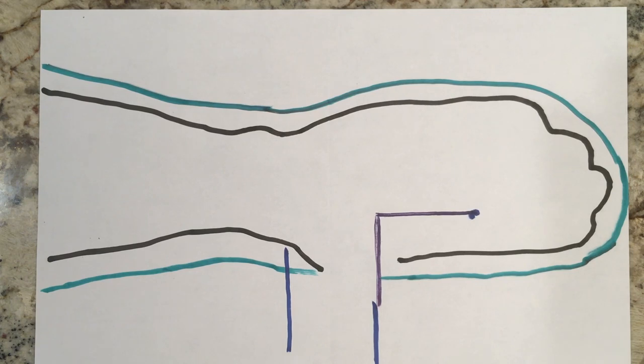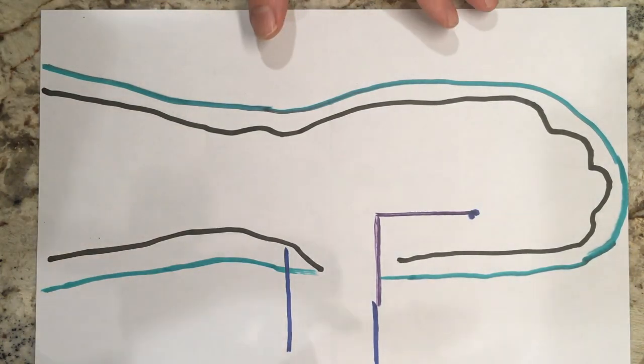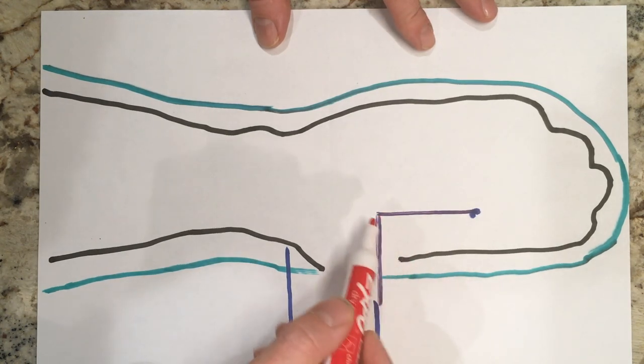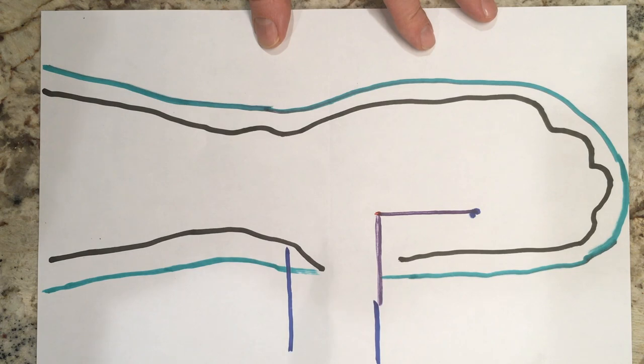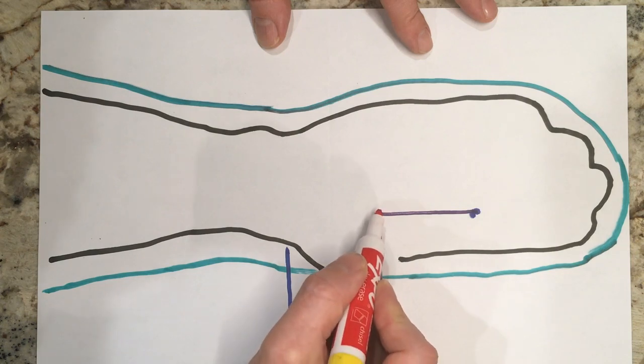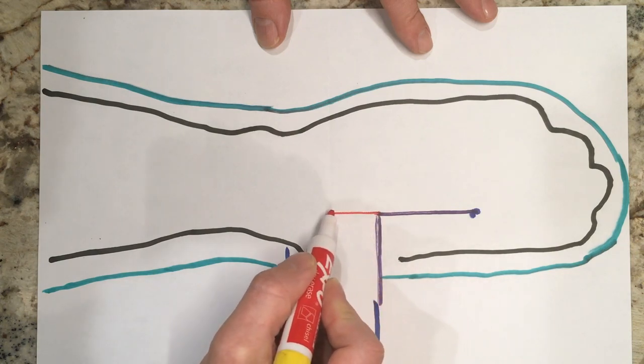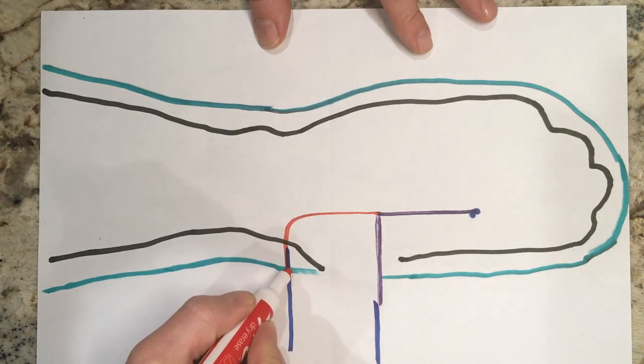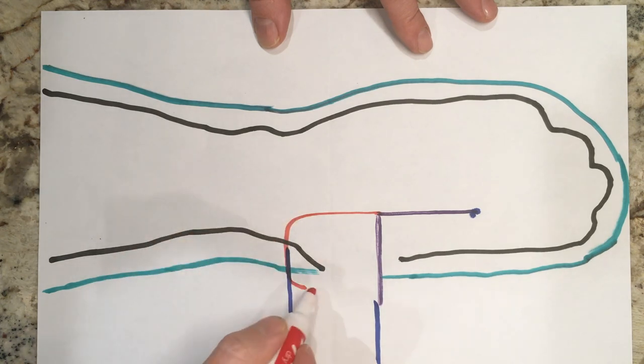From there you're going to draw the flap that will become the part of the orthosis that will hold the thumb. You're going to start right here at that intersection and come pretty much straight down. When you get to this line where the radial styloid was, you're going to come across a little bit. Make this plenty wide; you can always cut off if you have too much width, but it's nice to have enough width so you can get that thumb immobilized and positioned just how you want it.